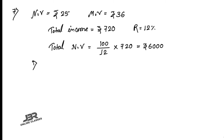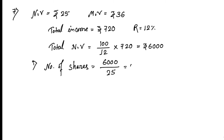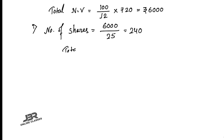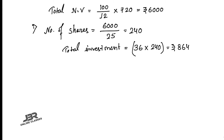To find the total investment: number of shares = total nominal value ÷ 25 = 6000 ÷ 25 = 240. Total investment = 36 × 240 = ₹8640. That is your first answer.